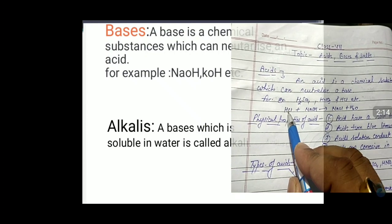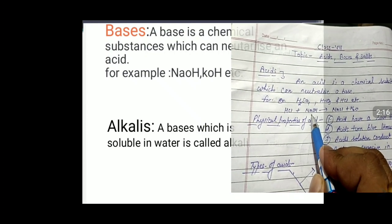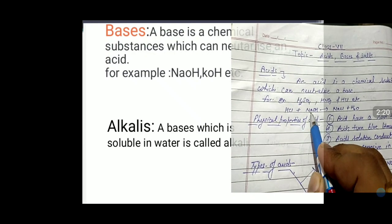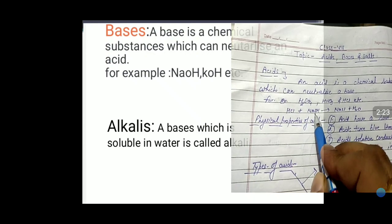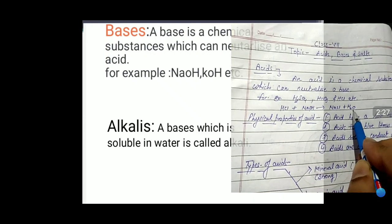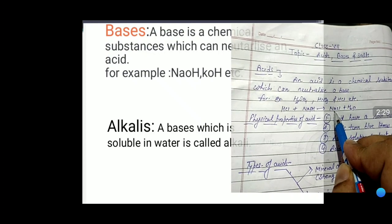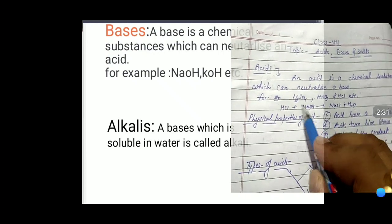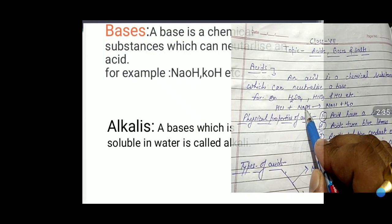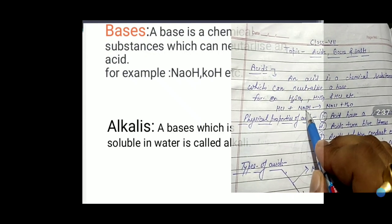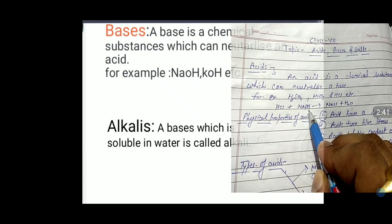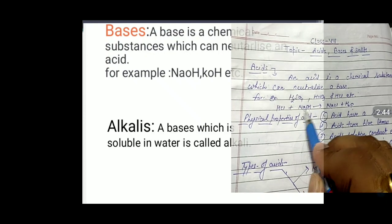HCl is an acid and NaOH is a base. When acid reacts with base, it gets neutralized into salt and water. For example, HCl reacts with NaOH to form NaCl (salt) and water. So an acid is a substance which can neutralize a base.